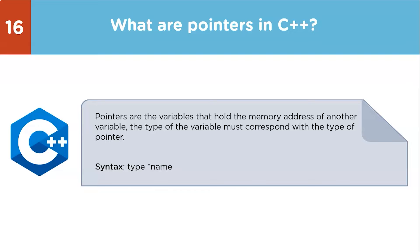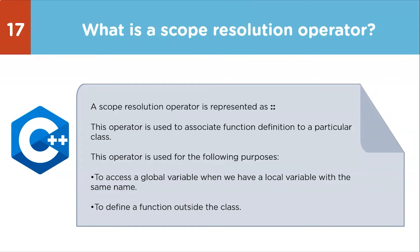Next question: what is the scope resolution operator? A scope resolution operator (::) is used to associate a function definition to a particular class. It is used for two purposes: to access a global variable when a local variable with the same name exists, and to define a function outside the class.